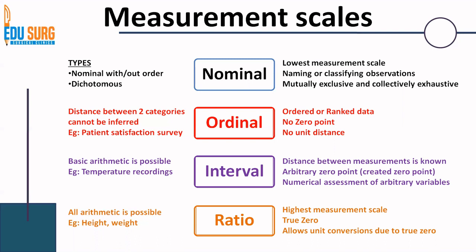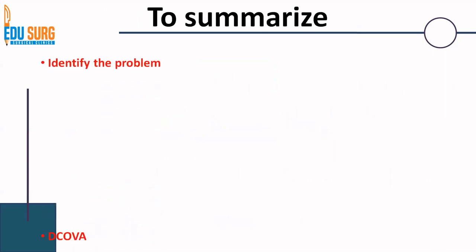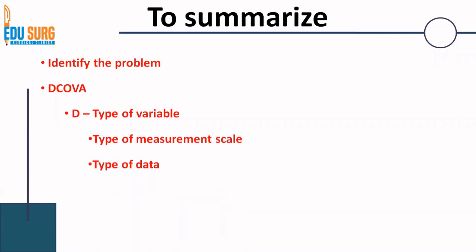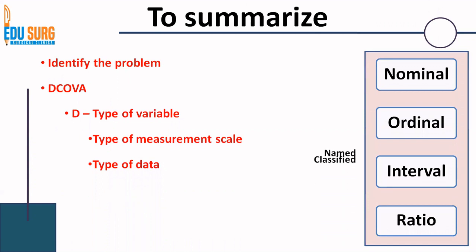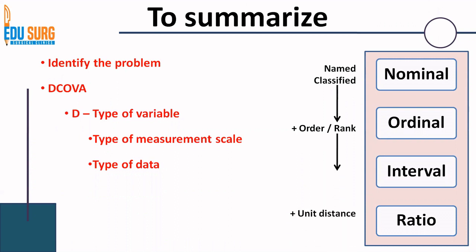To summarize what we have seen over the last four sessions: for any person to identify and solve a problem, it is very important to define the variable, the type of variable, the type of measurement scale, and the type of data — nominal, ordinal, interval, and ratio. To simplify: nominal is named or classified data; ordinal is ordered or ranked data but the distance between categories is not fixed; interval scale has a fixed unit distance between measurements; and ratio scale adds a true zero along with all the above factors. This is a simple way to understand the measurement scales.